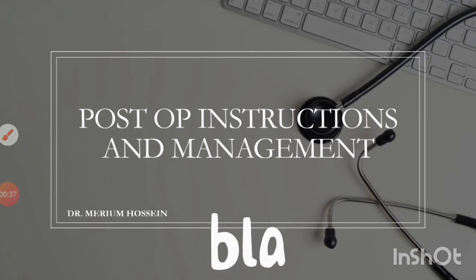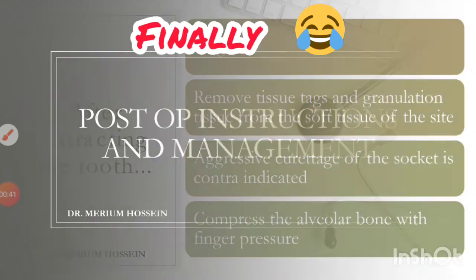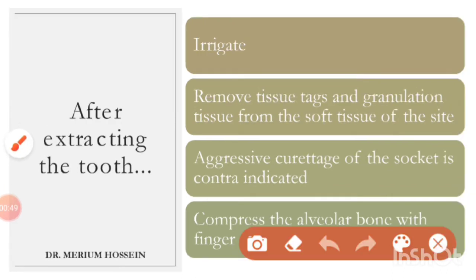After extracting the tooth, as a dental surgeon the first step is to irrigate the area. Irrigation is important because it removes bone fragments, detached soft tissue, debris, or calculus fragments present in the tooth socket. These can be removed easily with the help of forceful irrigation.